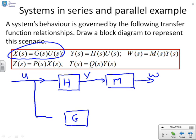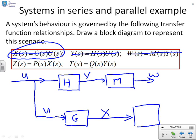I'm going to take off from U, so there's my takeoff point. So this is also U down here. And coming out of G is X. So I've now done this one, I've done this one, and I've done this one. So I've now got two left. Z equals PX, and T equals QY. So X goes here into P, and that gives me Z.